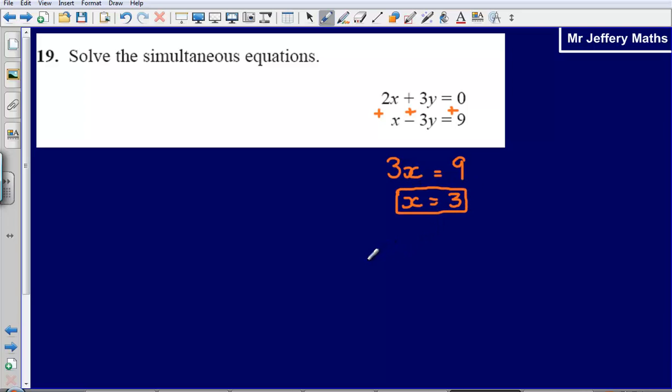So we've found out what x is equal to. Now what I'm going to do with this x is I'm simply going to substitute it into this first equation at the top here. So what I end up with is, so I've got 2x, so two lots of three, that's going to give me 6 plus 3y and that is equal to 0.